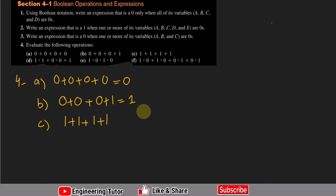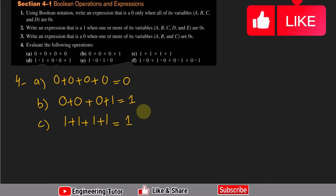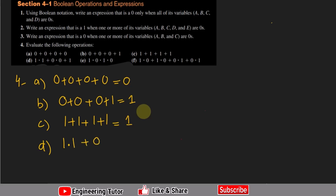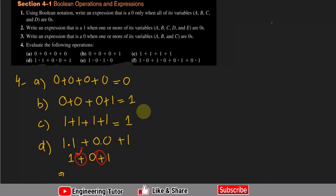This is like four switches connected in parallel — if all are short-circuited, the output is 1. In part d: 1·1 + 0·0 + 1. First evaluating the AND operations: 1·1 = 1, and 0·0 = 0. Then adding: 1 + 0 + 1 = 1. So the answer to part d is 1.